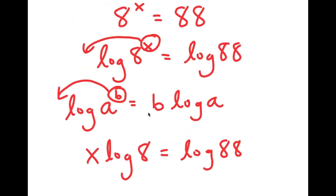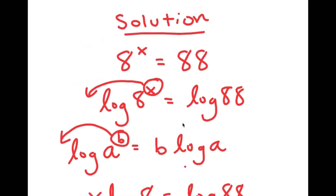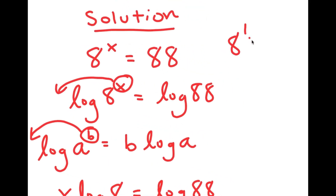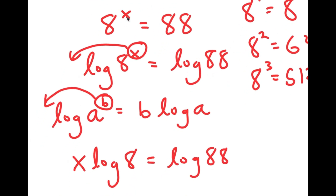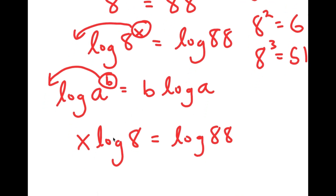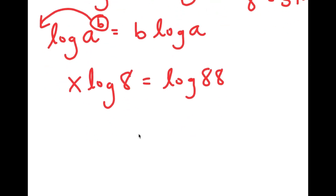The reason this property is so useful is because before, x was an exponent. For our equation, if x is 1, I get 8; if x is 2, I get 64; and if x is 3, I get 512. We want to find what value of x results in 88, which is somewhere between 2 and 3, but it's going to be a decimal. We can't find the exact value when x is in exponent form, so we make it into a real term using this property, and now it's much simpler to solve for.